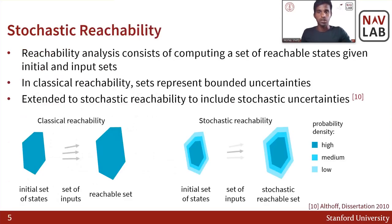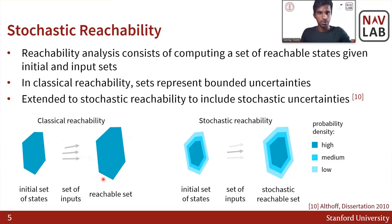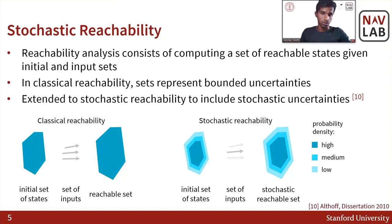Generally speaking, reachability analysis consists of computing a set of reachable states given an initial set of states and a set of inputs. In classical reachability, these sets represent bounded uncertainties. This was then extended to stochastic reachability in order to include stochastic uncertainties. In stochastic reachability, the sets contain a probability distribution within the reachable set, as shown here.